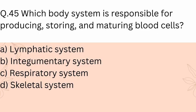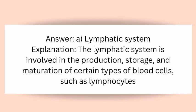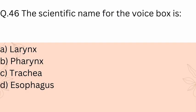Question 45: Which body system is responsible for producing, storing, and maturing blood cells? A) Lymphatic system, B) Integumentary system, C) Respiratory system, D) Skeletal system. Answer: A) Lymphatic system. Explanation: The lymphatic system is involved in the production, storage, and maturation of certain types of blood cells, such as lymphocytes.